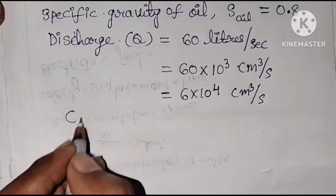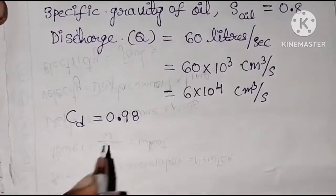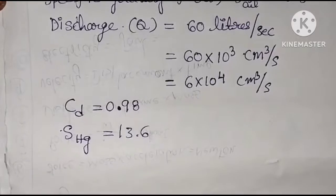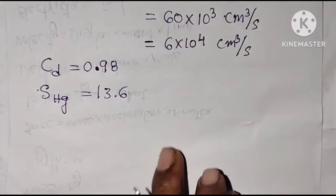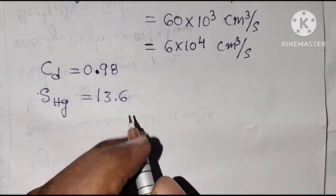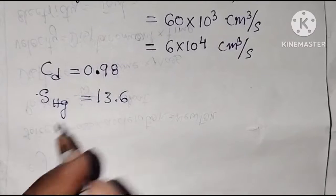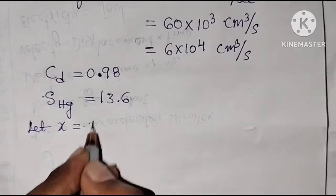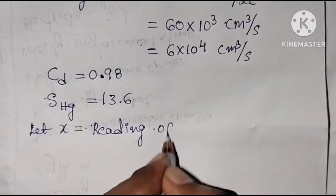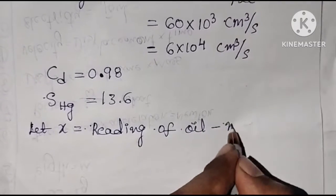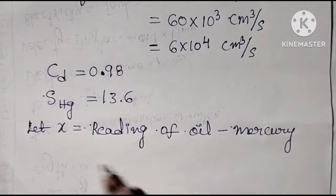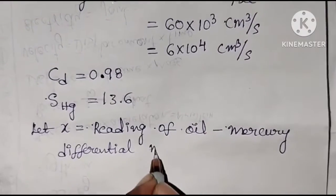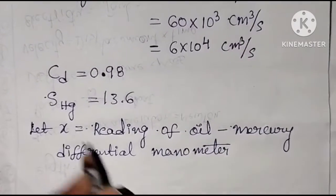Given coefficient of discharge Cd is equal to 0.98. Since we are using a mercury manometer, specific gravity of mercury is the standard value 13.6. So here we have to find x, the reading of the oil-mercury differential manometer.